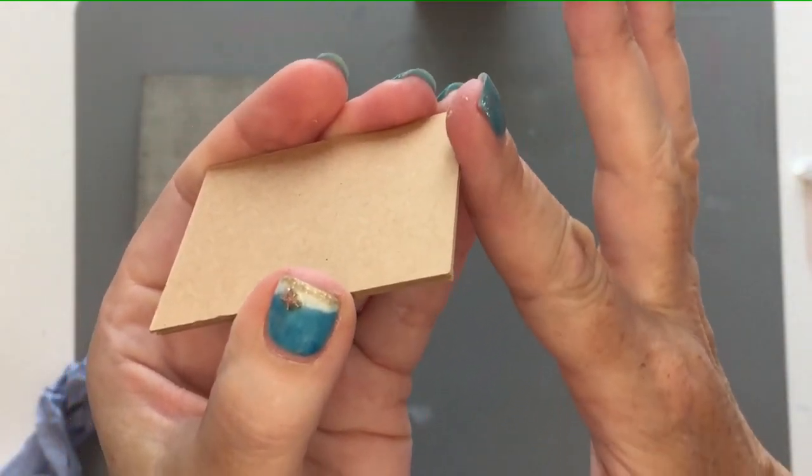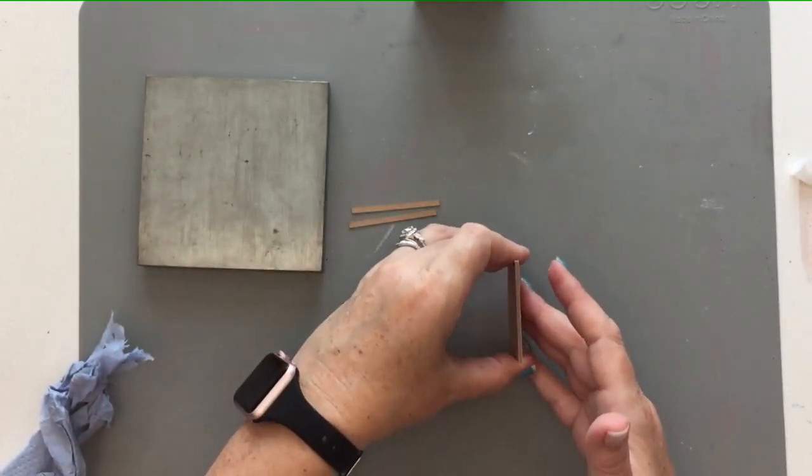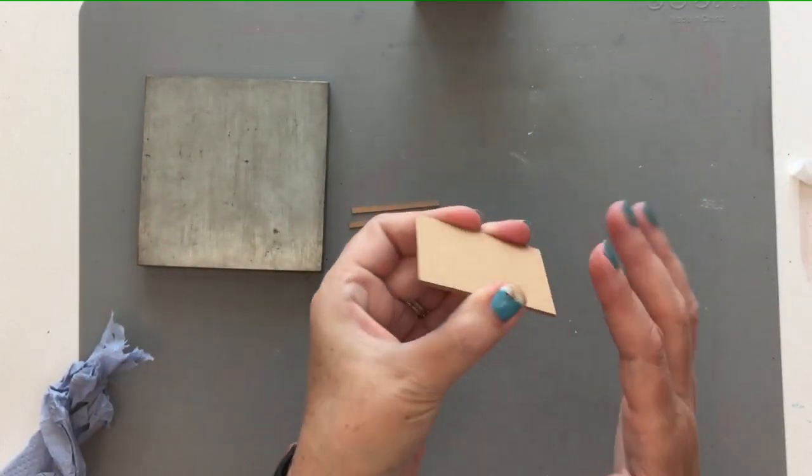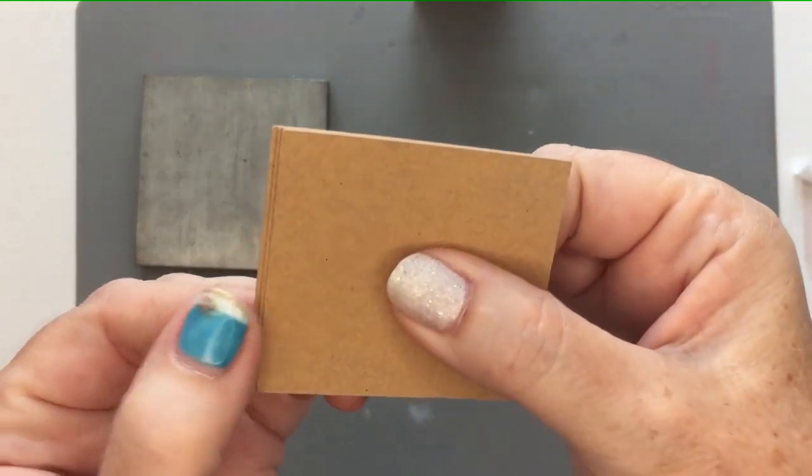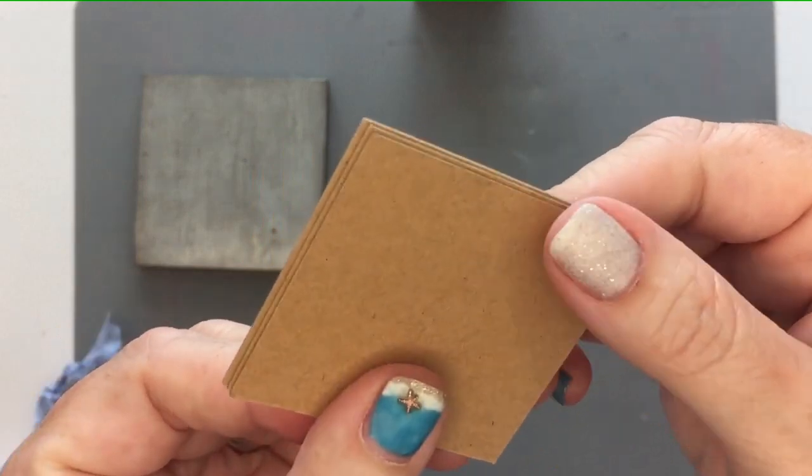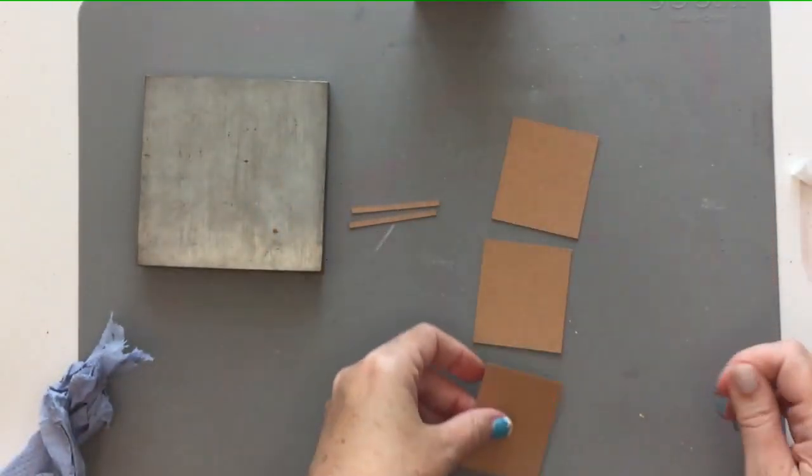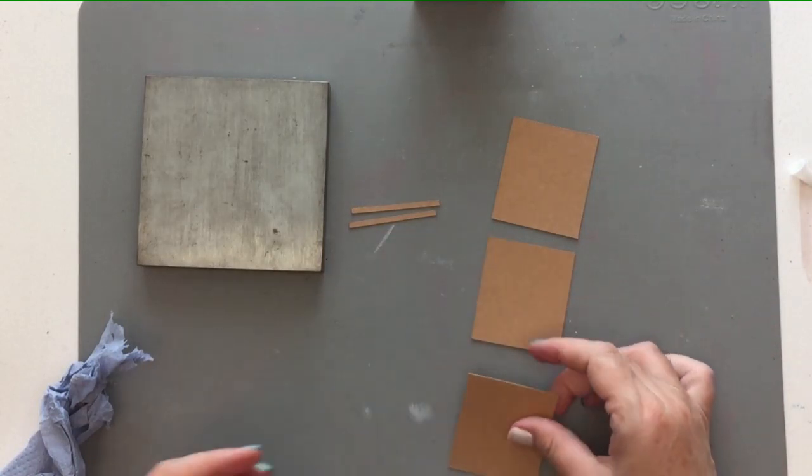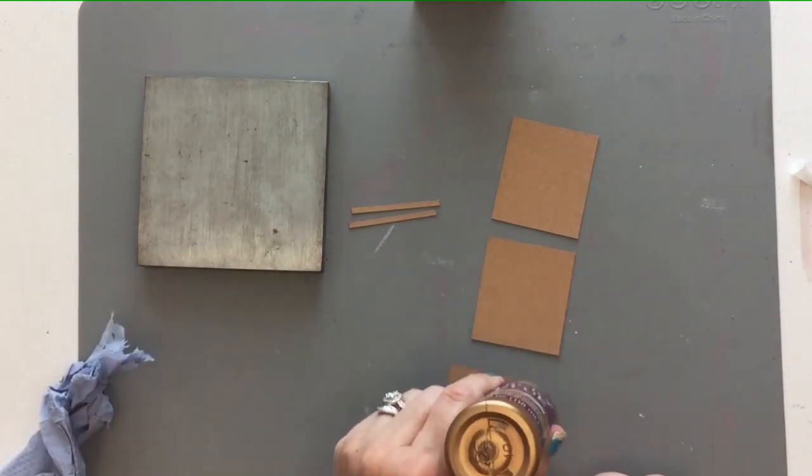And then the top edge there, you just want to slightly angle it on the bench so that when the back piece glues up against it, you've got more of a thicker edge. When you play around with this it will become easier to see. So start with the smallest piece, put the glue on that.